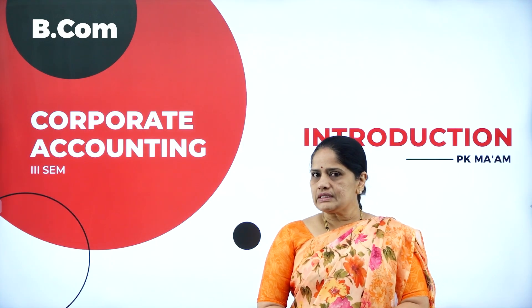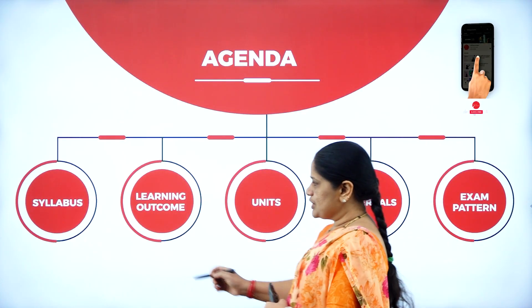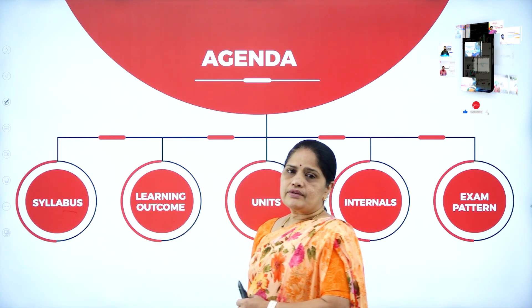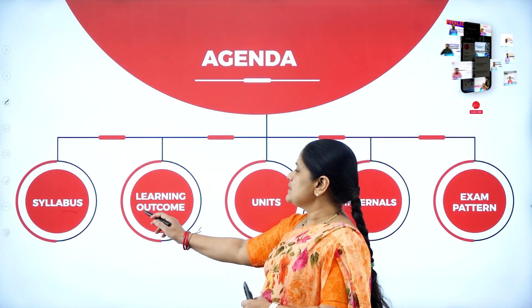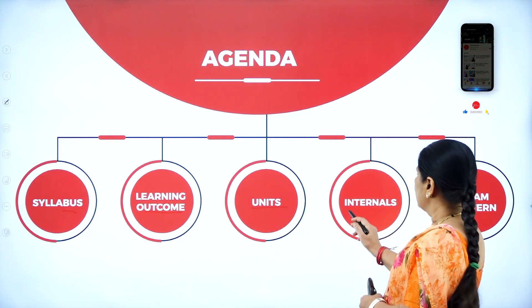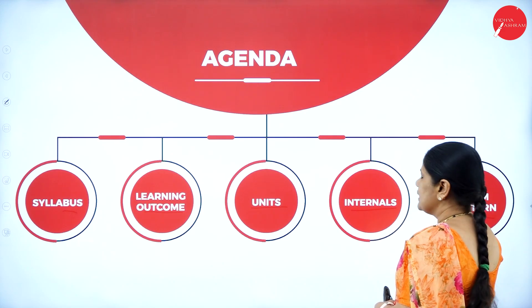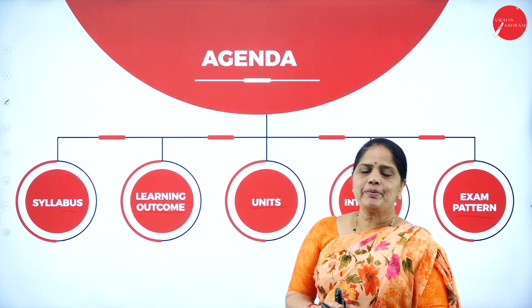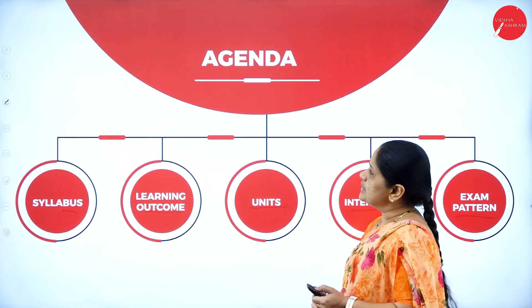Now let us see what this session holds for us. In this session, we will be having a discussion about the syllabus for Third Semester B.Com for the subject Corporate Accounting. We will also have a look at the learning outcomes, the units, the internals, and the exam pattern — what is the question paper pattern for the exam. So this will be the agenda of this session.